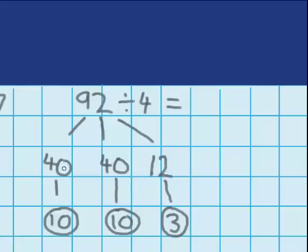So when I shared out the first 40, they got 10. When I shared out the second 40, they got another 10. And when I shared out the last 12 tennis balls, they got 3. So in total, they got 10, 20, 3, 23.